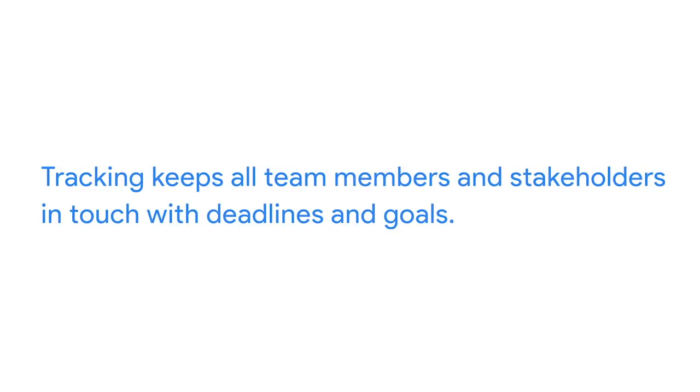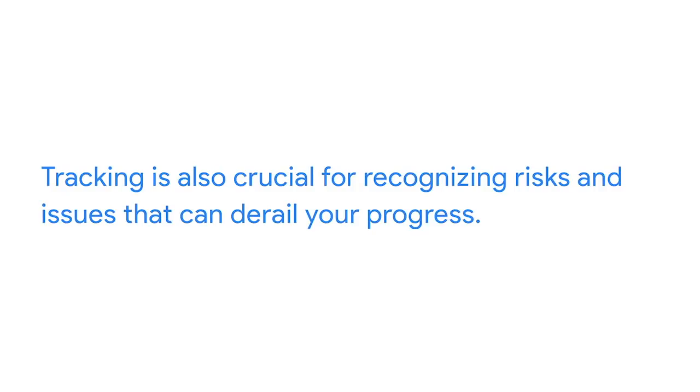Projects have so many little details, it's hard to keep everything straight. Tracking helps ensure that you don't risk forgetting something. Second, tracking helps keep all team members and stakeholders in touch with deadlines and goals. To ensure that everyone has visibility into project progress, you should have a project plan that works both for you and your team, so you're all on the same page about how the project is progressing. Tracking is also crucial for recognizing risks and issues that can derail your progress. With effective tracking, you'll be able to identify issues in a timely fashion and work with your team to take corrective action.